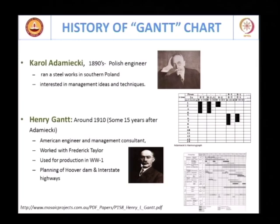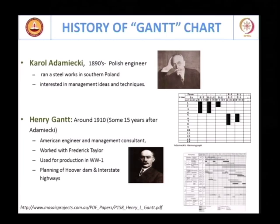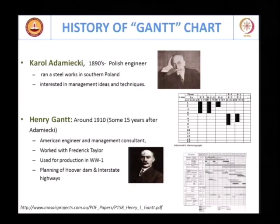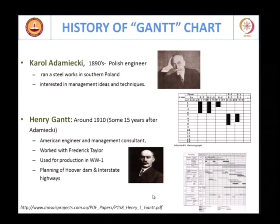The Gantt chart was very popular for production processes in World War I. It was used for planning the Hoover Dam and the interstate highways in the US — it got really popular because of its simplicity. There is also evidence that Germans used a similar chart, for example for bridge construction. So while the world knows it as a Gantt chart, it was a common-sense approach used by quite a few engineering managers. I recommend you read the reference given below, which gives you access to the original books by Gantt and they are now in the public domain.